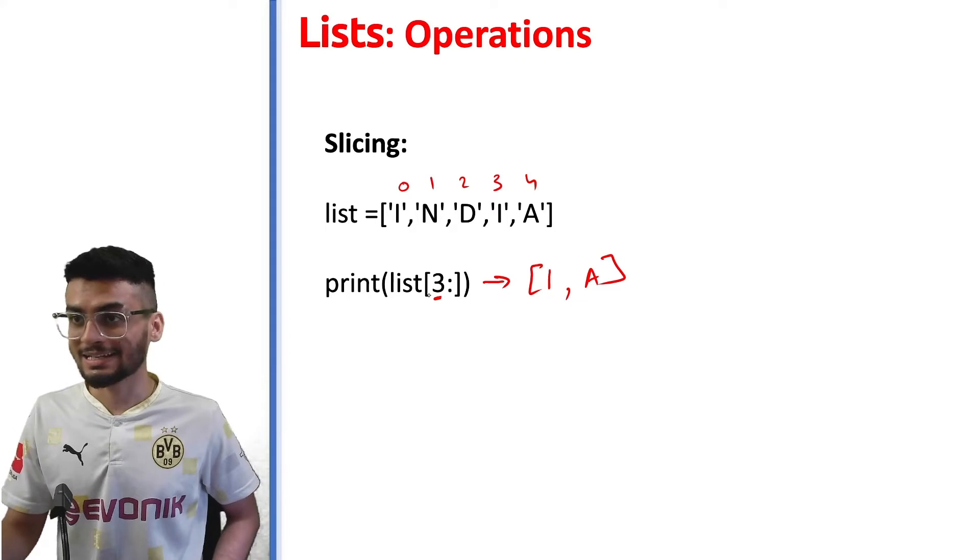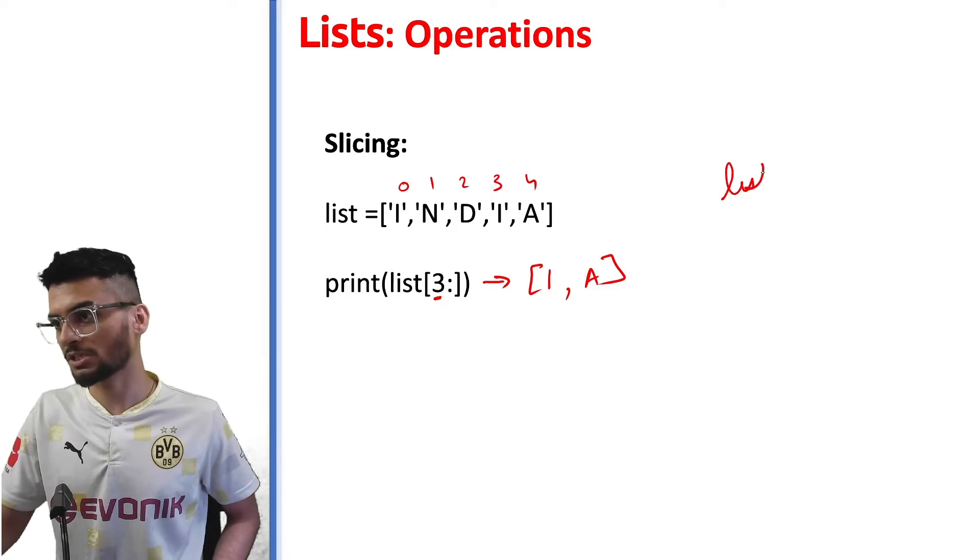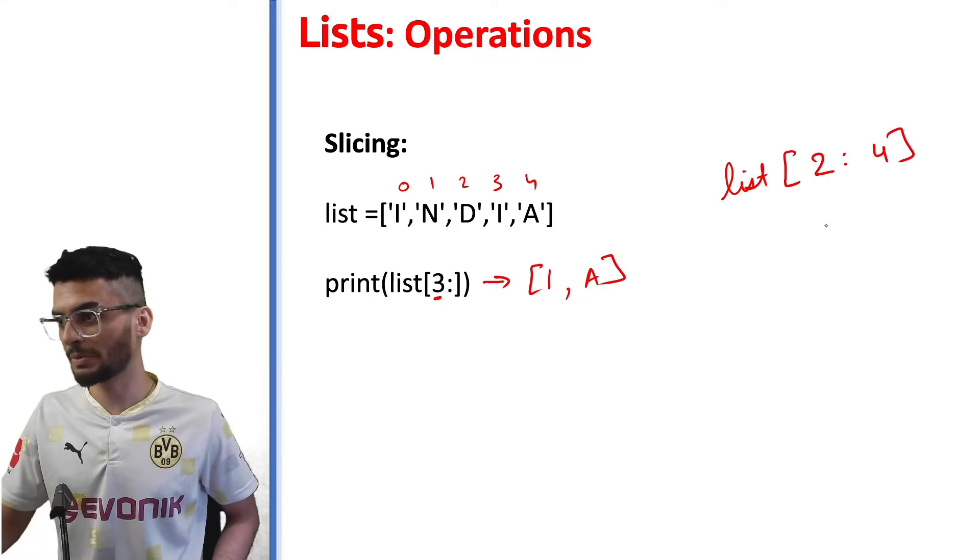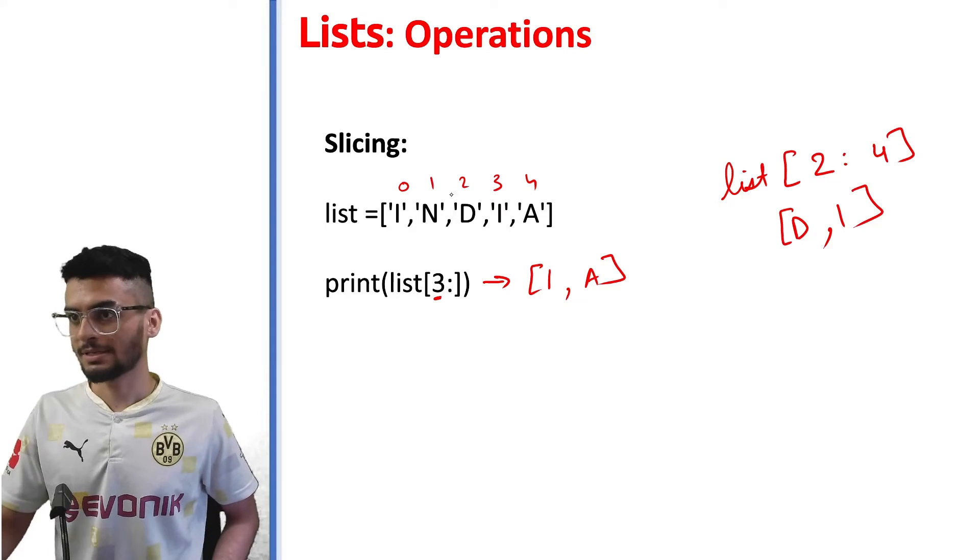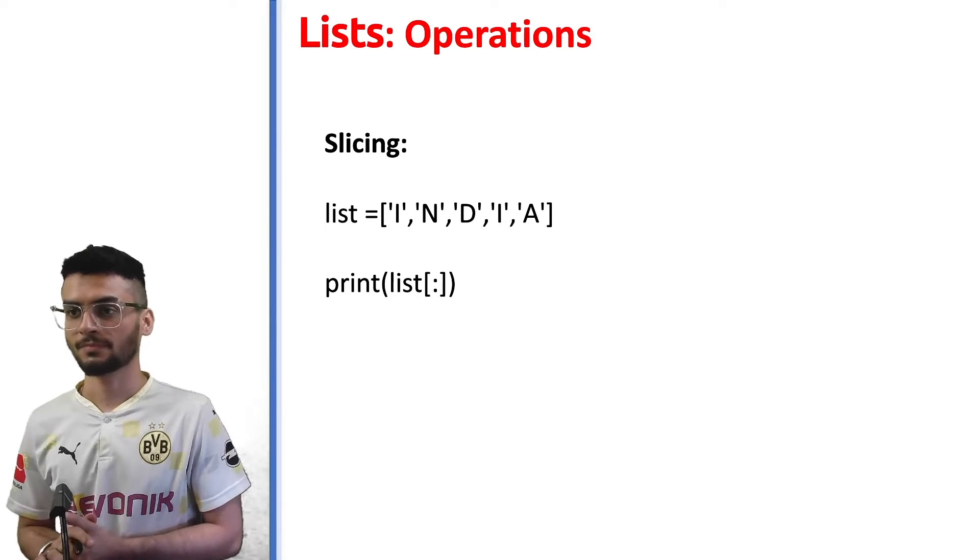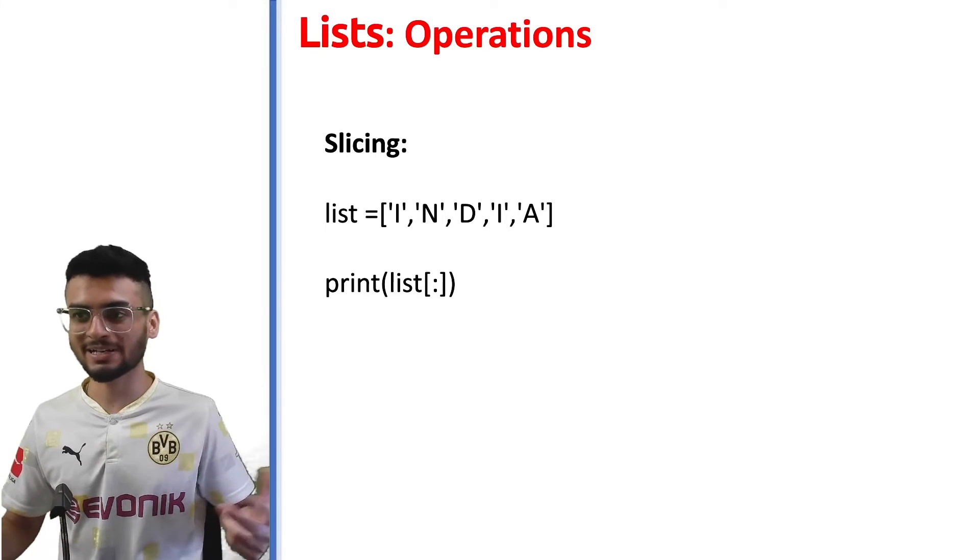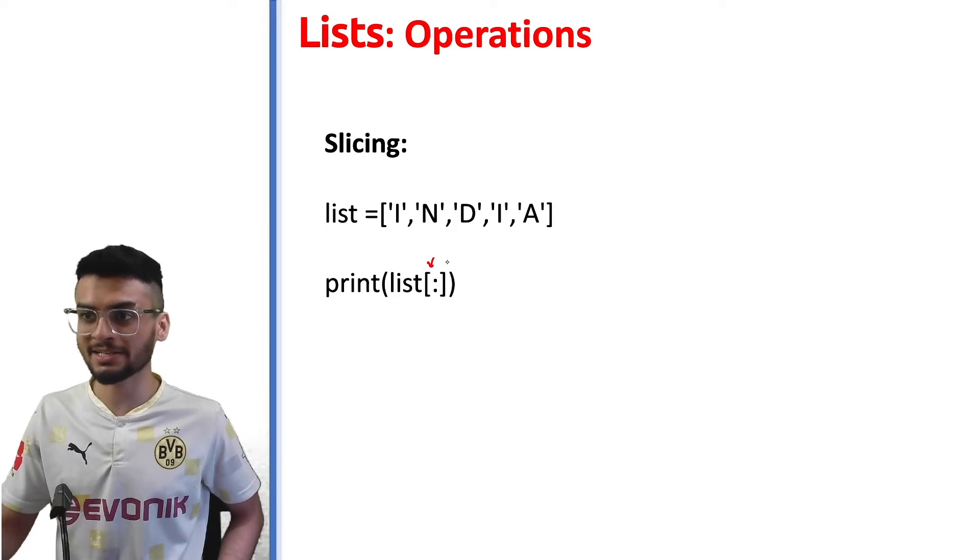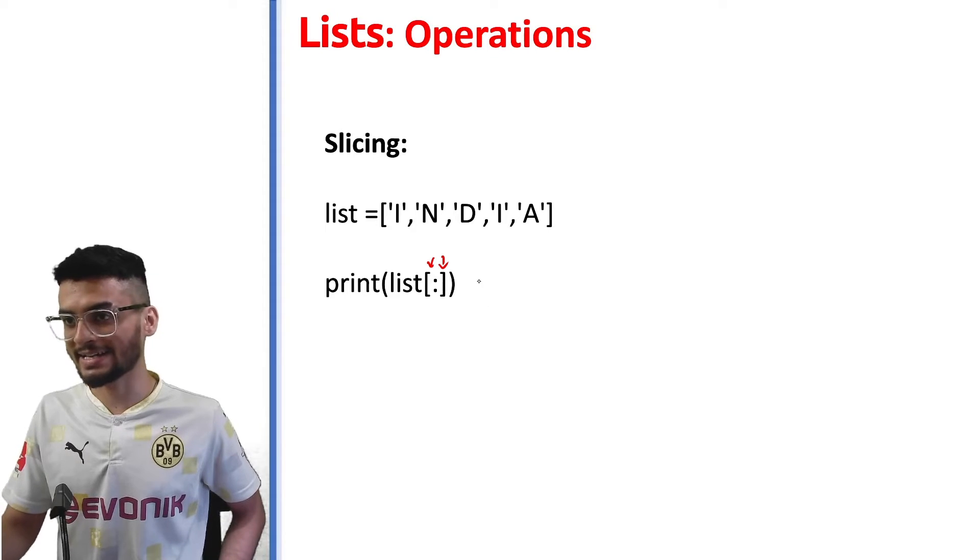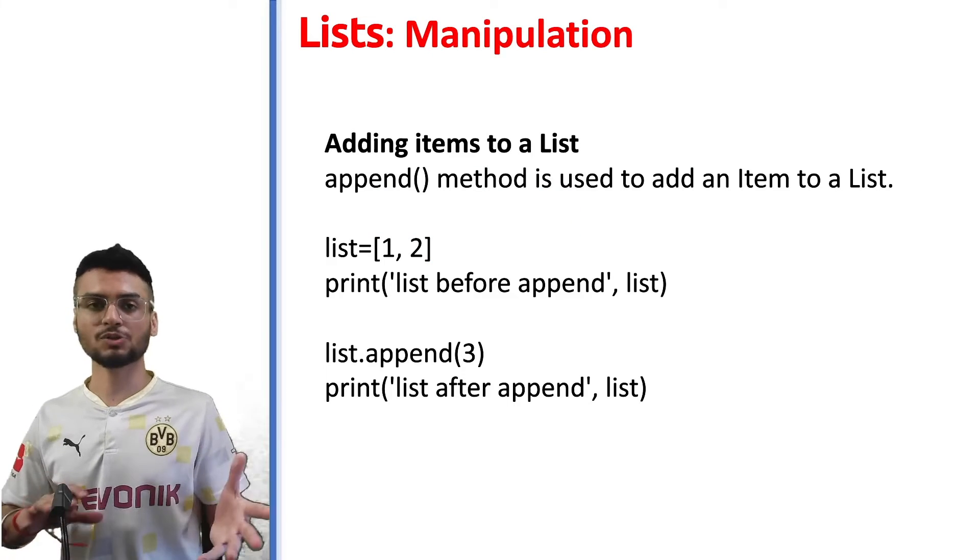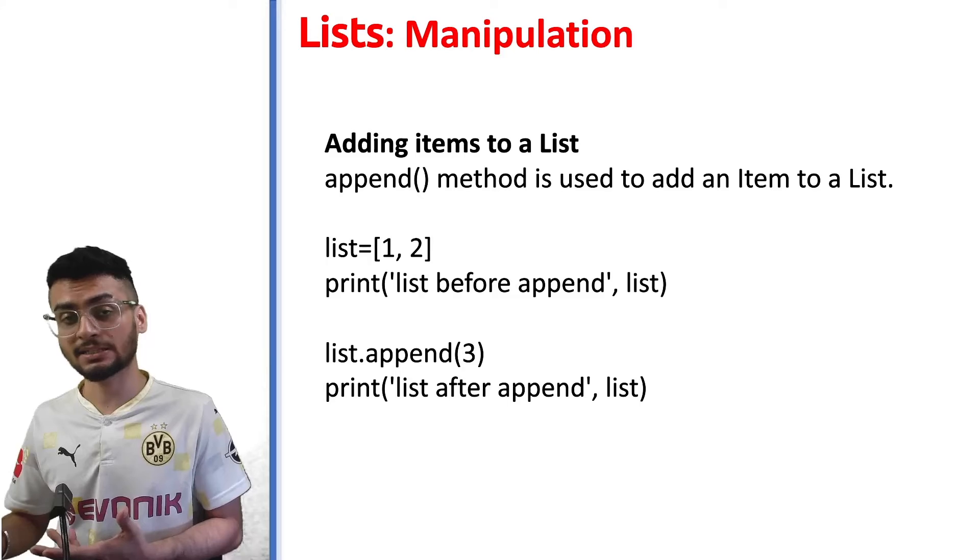So I hope you understand how list slicing works. I can give something like this: list starts from two to four. Now the things which would be printed will look like this - second element would be printed and the third as well. There is another case where I want to print the entire list. So it is kind of unnecessary, but let's just see how this works - where I haven't given start element or end element. Which means the entire list will be printed as it is. So this was about slicing.